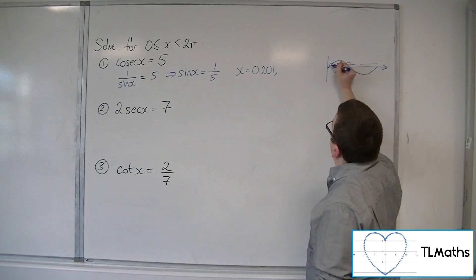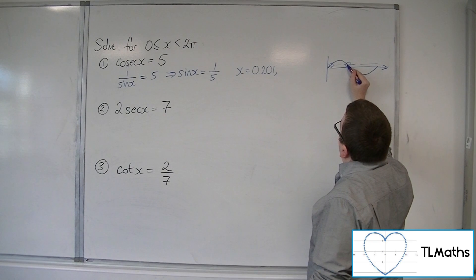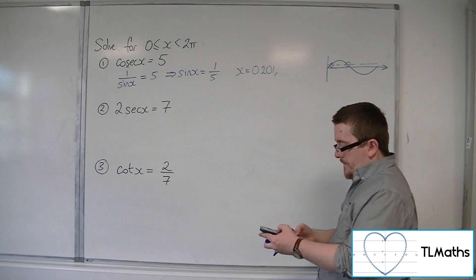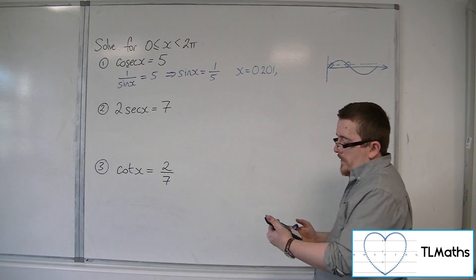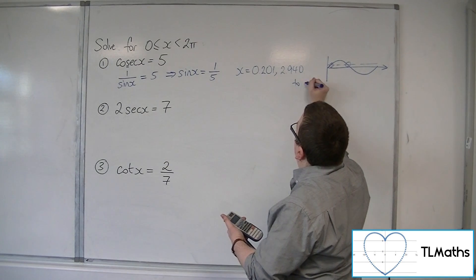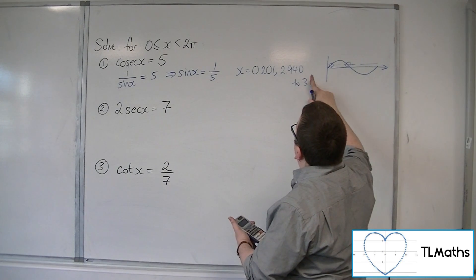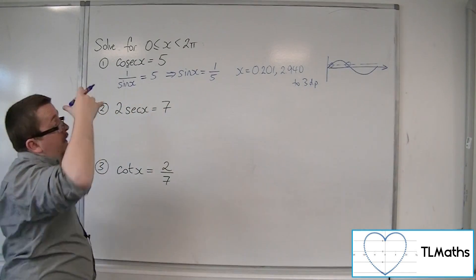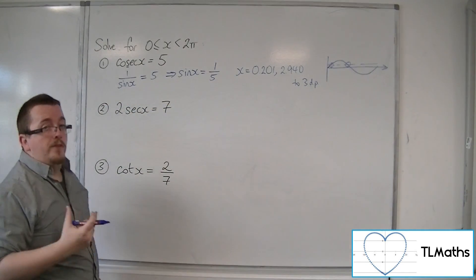That gets us this point here. And then we can get the second solution by doing π take away that value. So π take away the answer is 2.940, 3 decimal places. So that's how we can solve the first one.